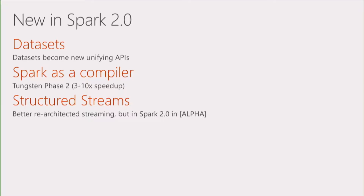What's new in Spark 2.0? First, new APIs that allow you to seamlessly create data pipelines — both batch-oriented and streaming. Second, a major improvement to the core engine that moves toward code generation, making Spark more like a compiler, with significant speed improvements. And third, a new streaming architecture called Structured Streaming. There are also smaller features like extended SQL support and new ML algorithms in R.